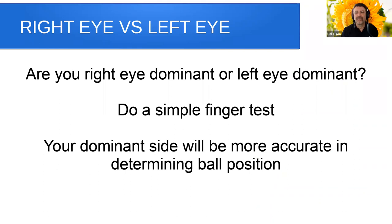Something to test about yourself: whether you are right-eye dominant or left-eye dominant. This can be done with a simple finger test at home or outside. Your dominant sight will be more accurate in determining ball position. We'll get into that in a minute, but first we'll start with the finger test and how you do it.